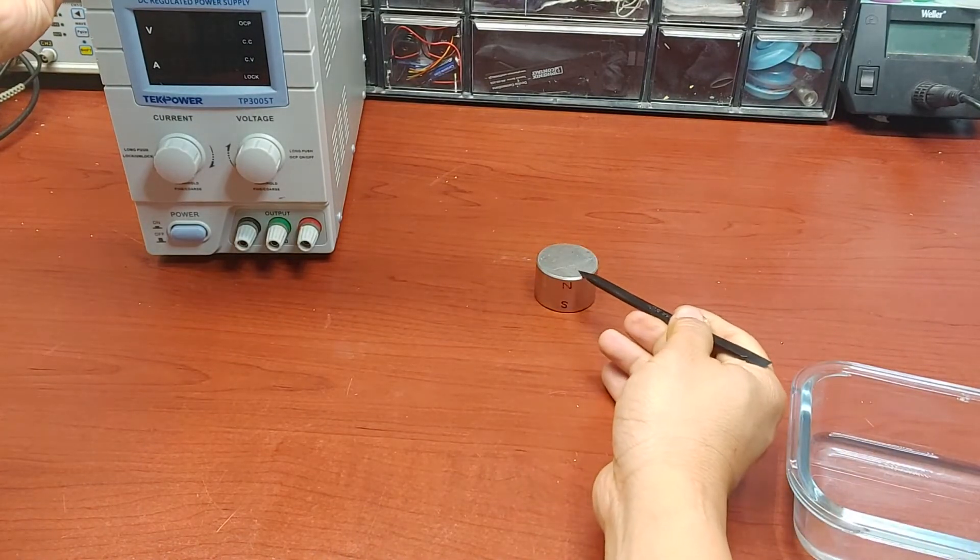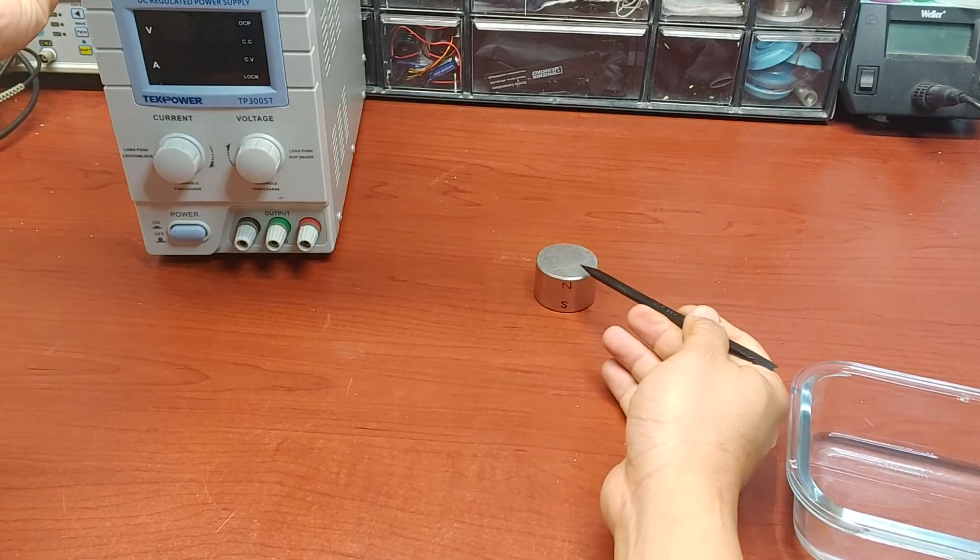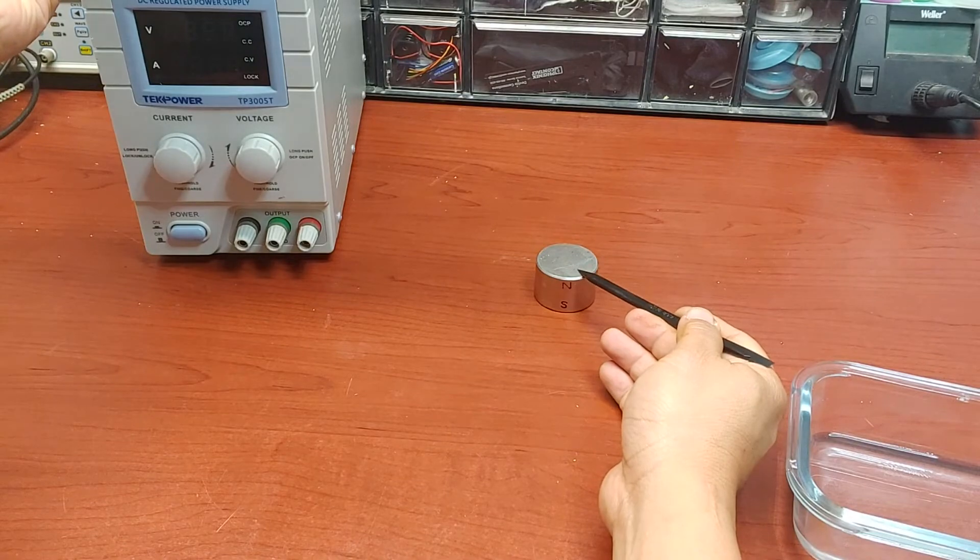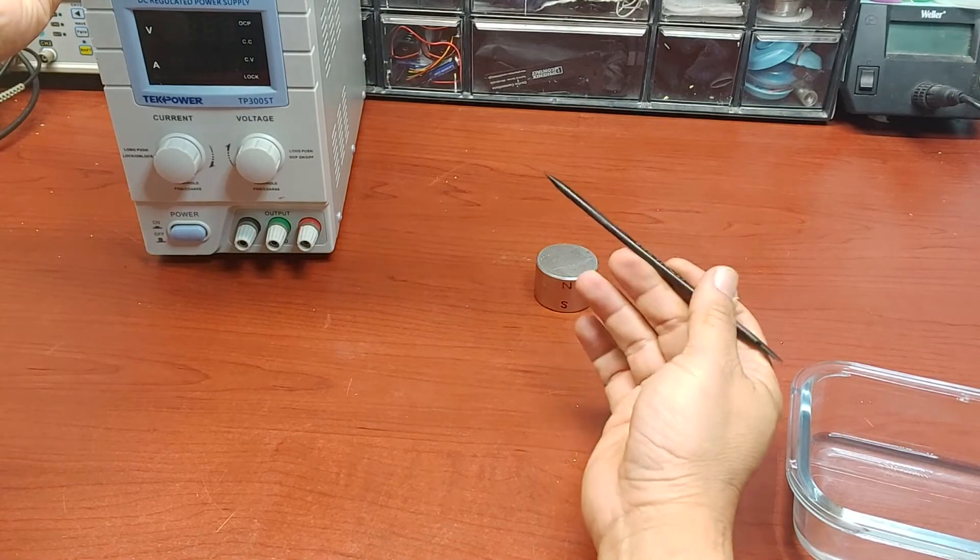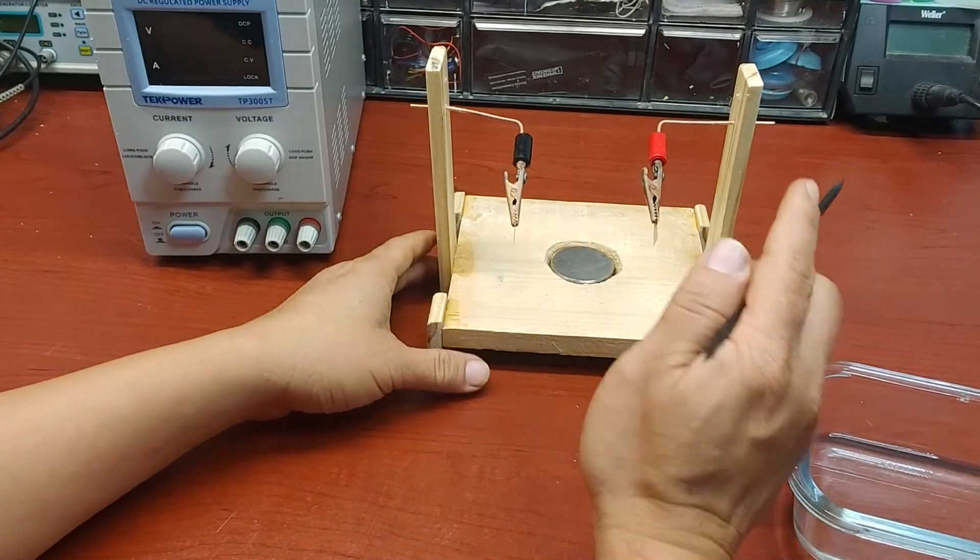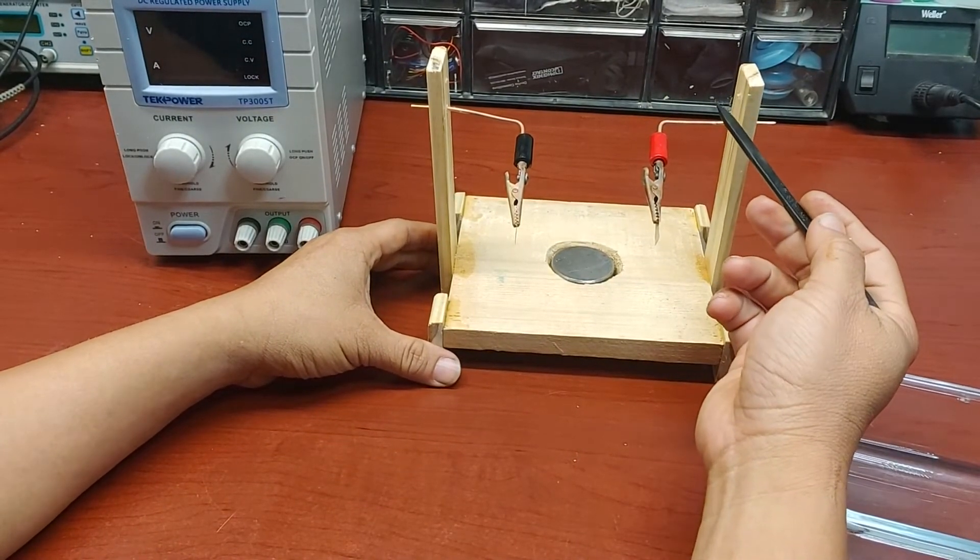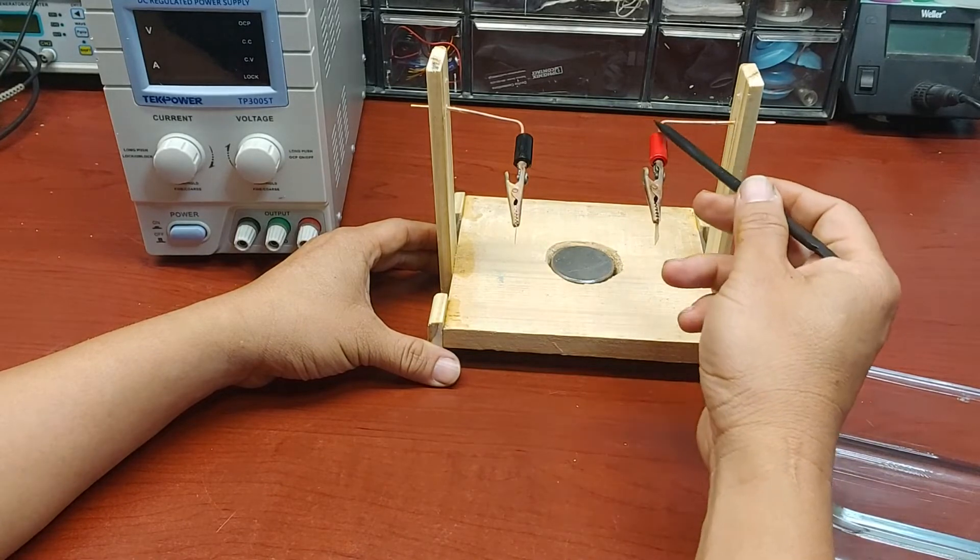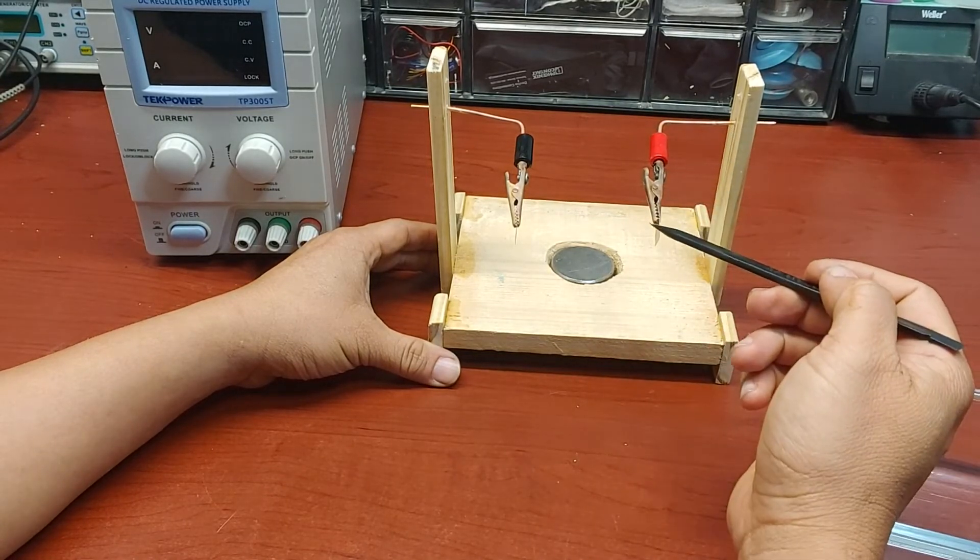Here is the permanent magnet we used in the previous experiment. Here are the two terminals attaching to platinum electrodes.